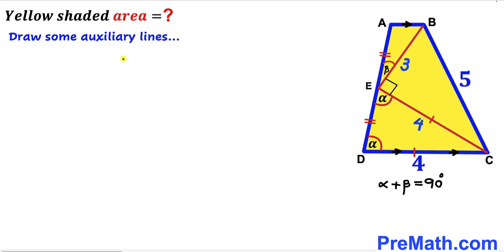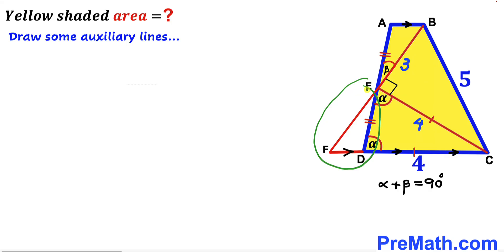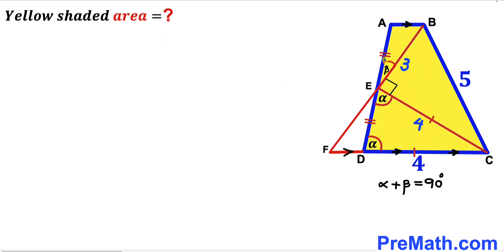In the next step we are going to think outside the box and draw some auxiliary lines to make our job simpler. We create triangle DEF such that segment FD is parallel to segment AB. This angle beta and the adjacent angle are congruent since they are vertical angles — if this angle is beta, this one is beta as well. Furthermore, this angle is congruent to this angle since they are alternate angles.